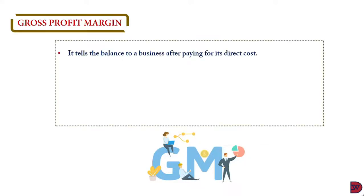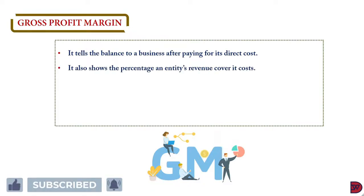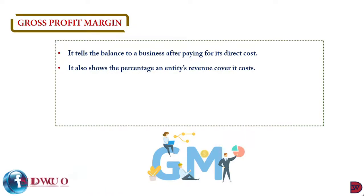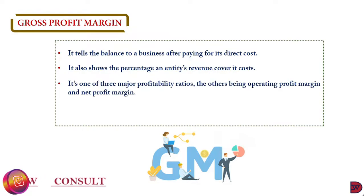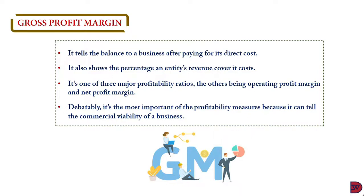A gross profit margin tells the balance a business has after it has paid its direct costs, cost of production, or cost of goods sold. It can also show the percentage of the business's revenue that covers its costs — which percentage of sales covers or pays for direct costs. It is one of the three profitability ratios, the others being the net profit margin and the operating margin.